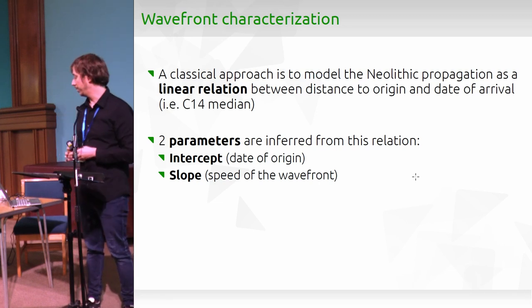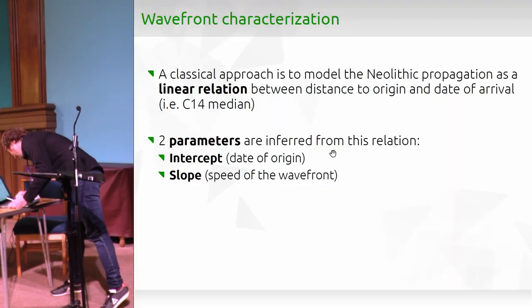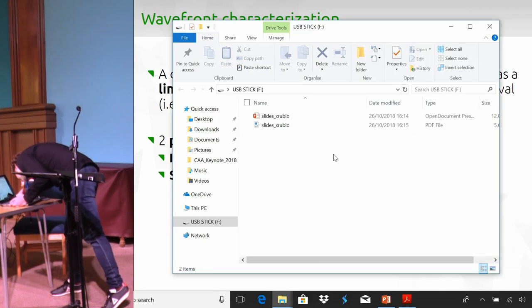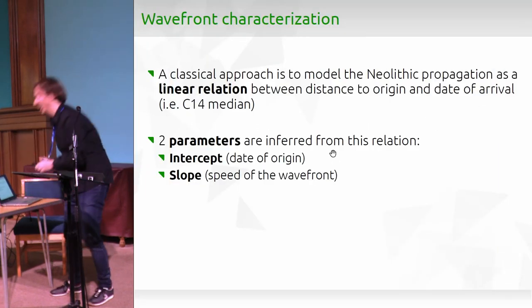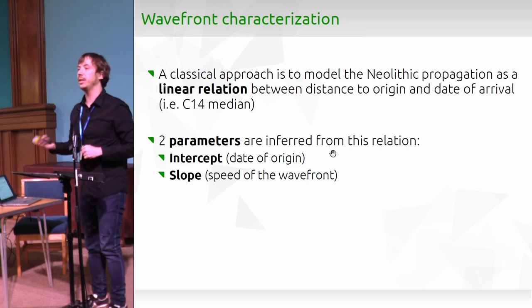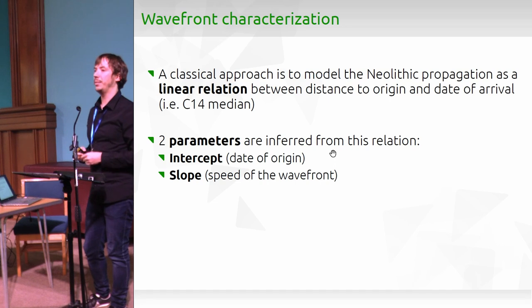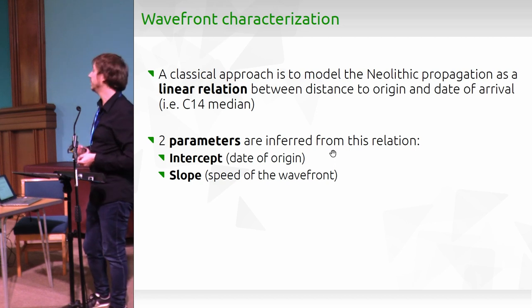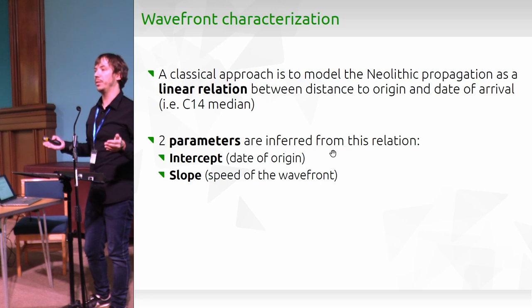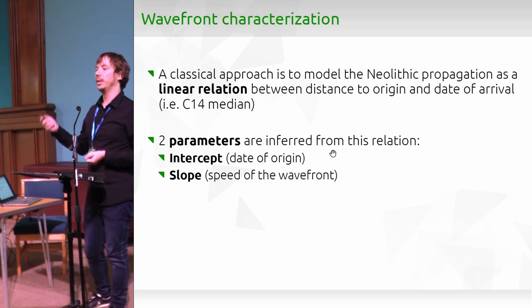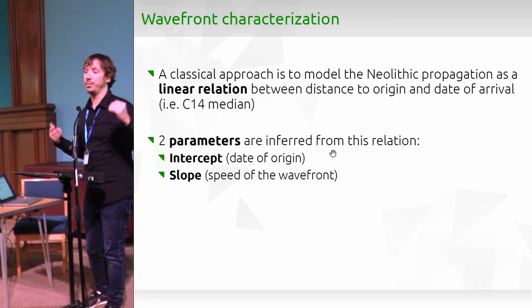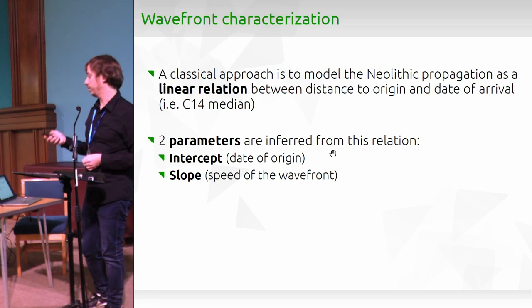One of the things you can do with this data is what's called wavefront characterization. The idea is to assume that dispersion is linear — every year people move at the same speed and cover the same distance. Using the C14 median, which is the center value of the entire probabilistic distribution of a C14 date, you try to infer two things: the intercept, which is the date of origin where everything started, and the slope, which is the speed.